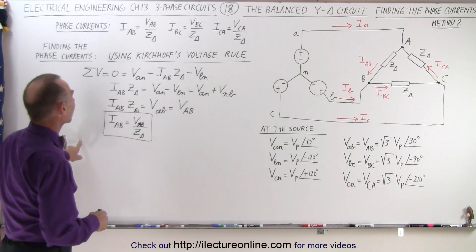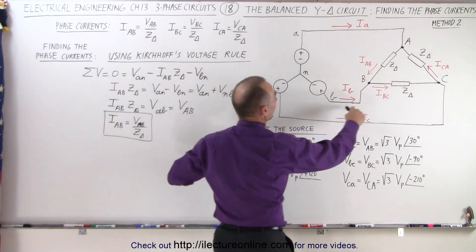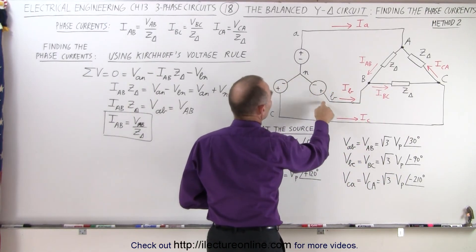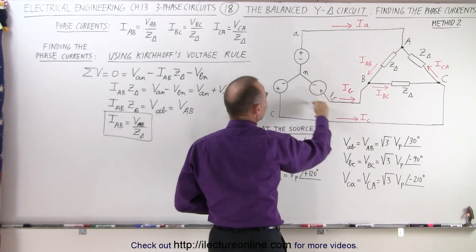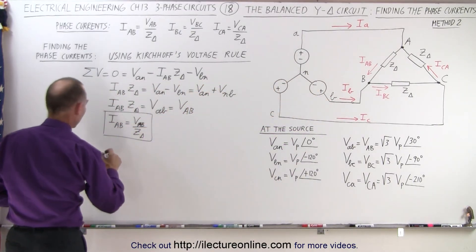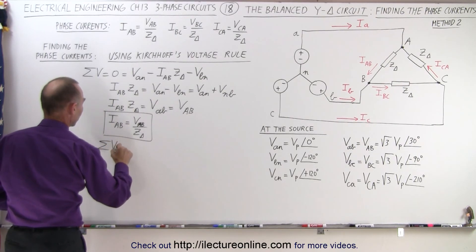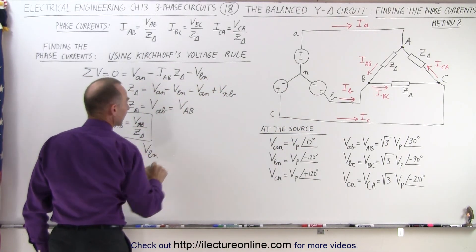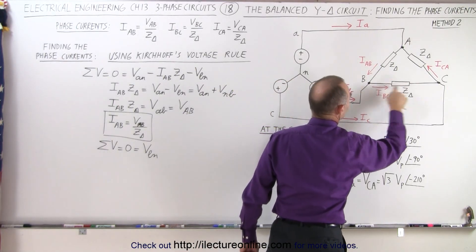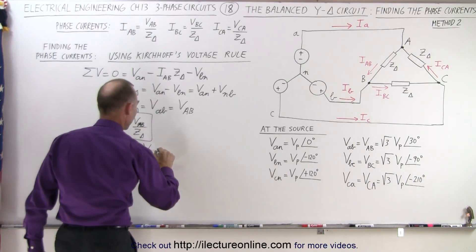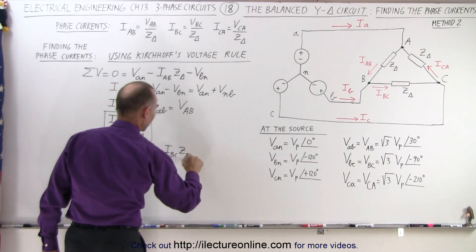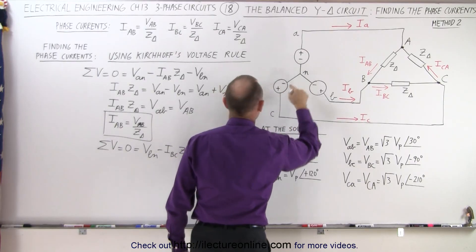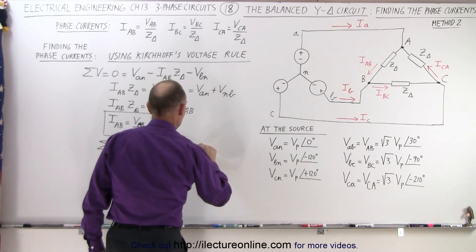Now we're going to find the next current, IBC. We need a loop where we travel through this branch of the load. We take the current IBC and start from N to B, so we have a voltage rise VBN. The sum of all the voltages adds up to zero: the first term is voltage rise VBN, then we drop voltage across the impedance traveling in the same direction as the current, so minus IBC times the impedance. Then we come around and drop the voltage from C to N, so minus VCN.